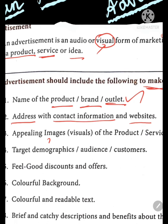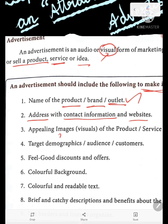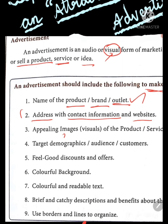The next point is address with contact information and websites. Nowadays you have websites — www dot — worldwide web abbreviation. You include email address, phone number, and whatever contact details you have. You should give all of that in your address section. That is the second point.